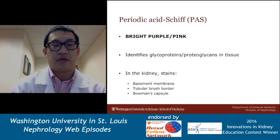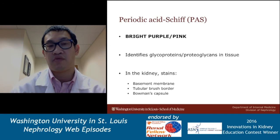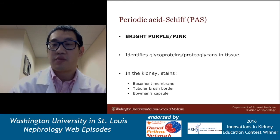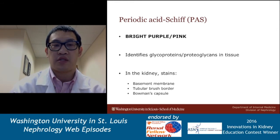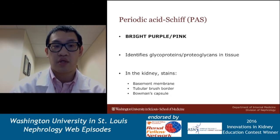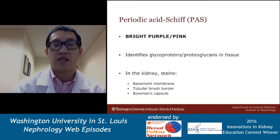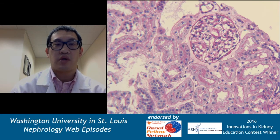The PAS is next. This is the stain that I think most people get confused with the H&E, or vice versa. They do look similar, but here are a couple of tricks to tell them apart. The PAS stains bright purple and pink — instead of the blue and the pink, it's bright purple and pink. And it identifies different structures: it identifies glycoproteins and proteoglycans in the tissue. In the kidney tissue, that is the strongest staining within the basement membrane, the tubular basement membrane, the capillary loops, the tubular brush border, and also Bowman's capsule, which surrounds the glomerulus. Those will stain kind of dark.